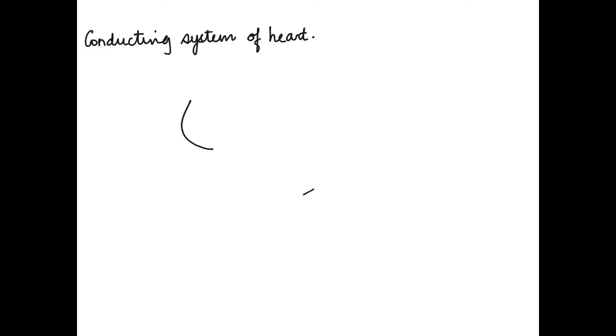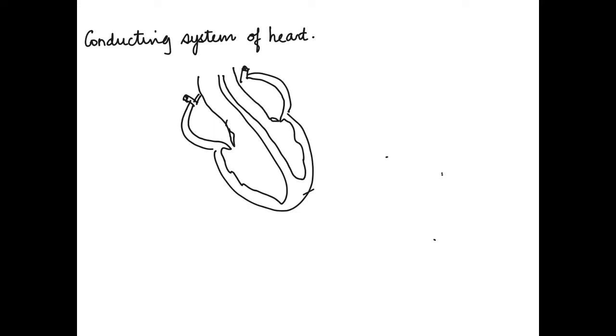In this video I am going to talk about the conducting system of the heart. The conducting system of the heart consists of cardiac muscles and conducting fibers. These help in initiating the impulses and conducting them along the muscles of the heart.